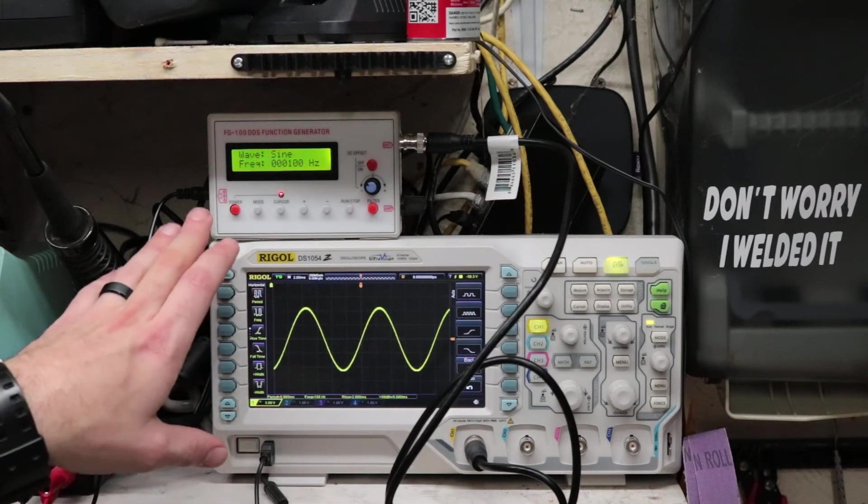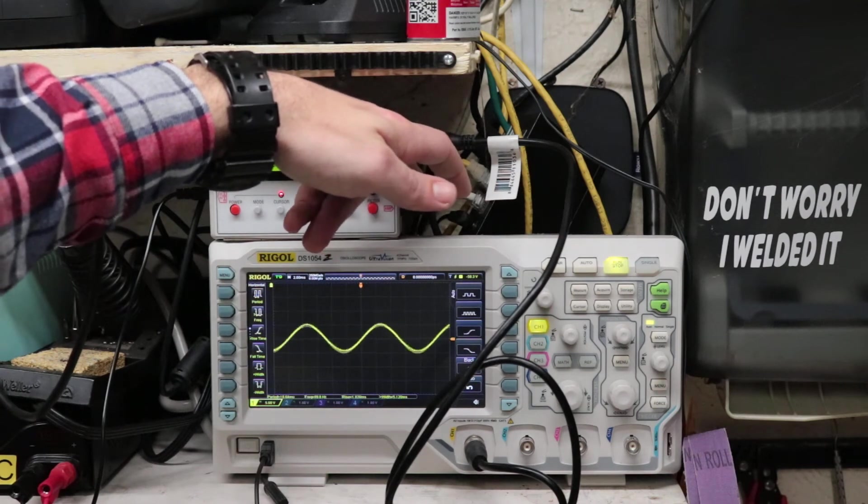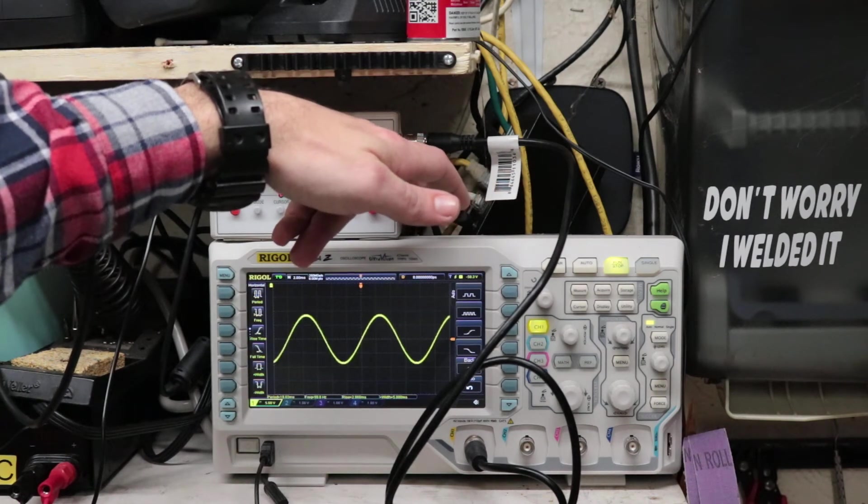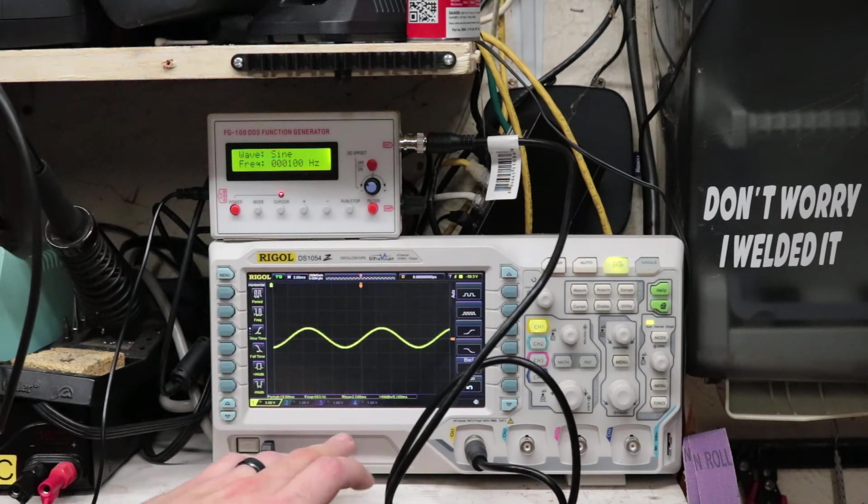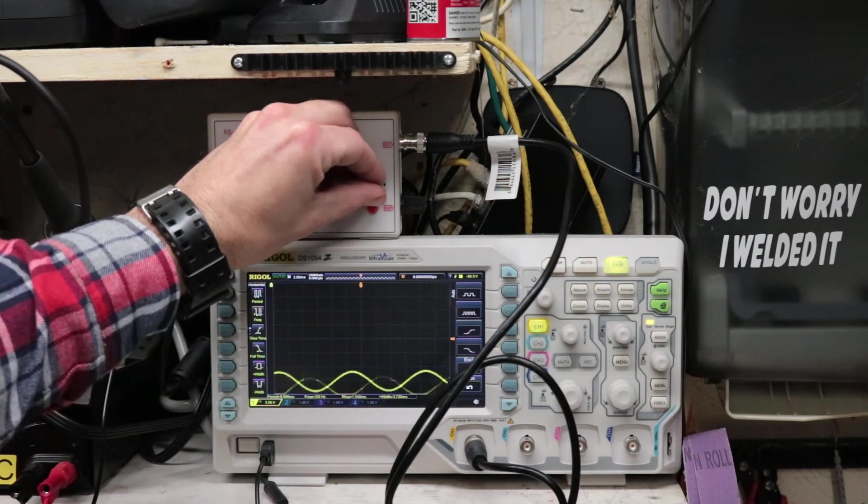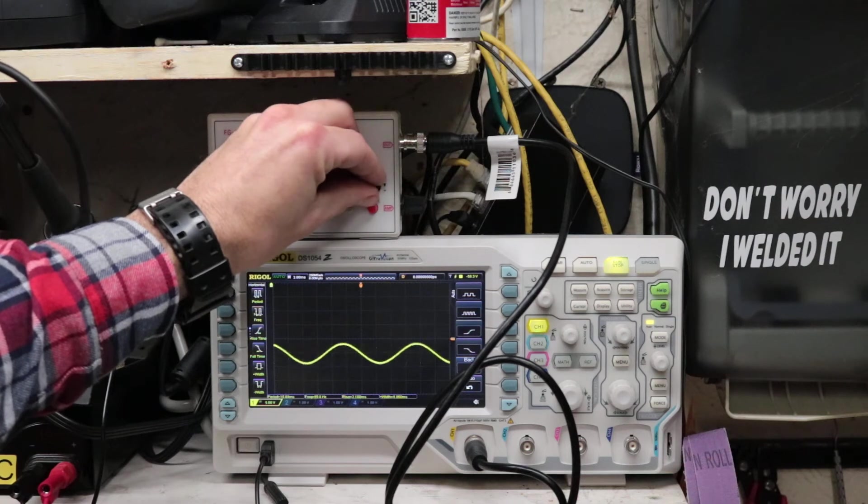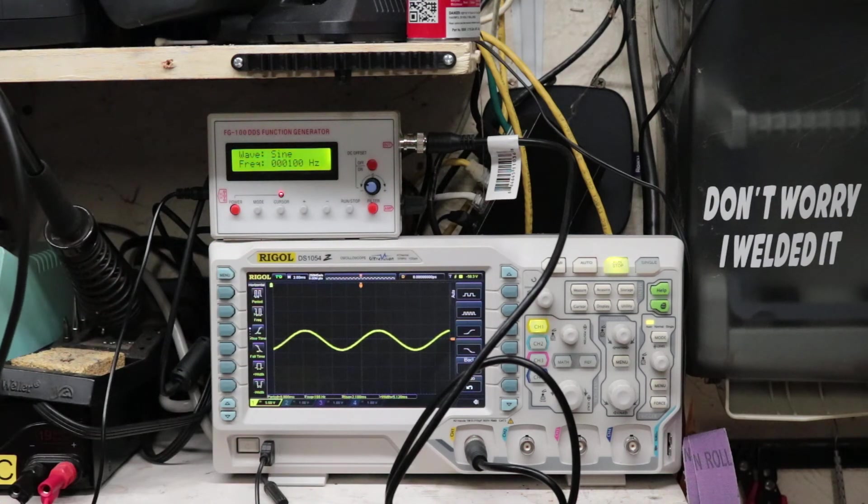This function generator has an amplitude knob on the side, and that's how you can increase and decrease the amplitude. As you increase the amplitude, the frequency stays the same while you're changing the rise time. It also has a DC offset which allows you to move it up and down the scope, so if you have a couple different signals going on you can get it to match without it getting out of range.